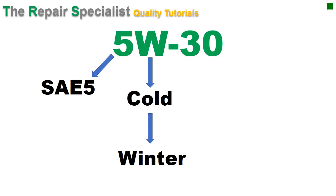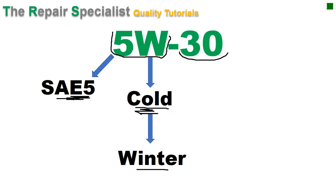What that means is that during the winter, associated with the cold, this oil — because this letter and this number go together — during the cold has an SAE rating of 5. The chemical composition inside allows this oil to have a very thin viscosity so that when the engine is started from cold, that oil can get up to the vital engine components as quickly as possible.